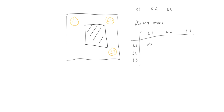For the same locations it's always zero because we're at the same location. Then we have values: 150 between L1 and L2, 300, and 200. This is a triangular matrix, so the values are the same for the opposite direction — between L1 and L2 is exactly the same as L2 and L1, which is 150. Similarly for 300 and 200.